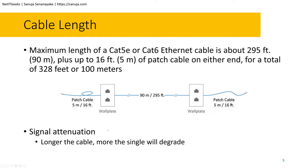The reason is signal attenuation. If you have a 200 or 300 meter Cat5e cable, you may completely lose the signal. But if you have 110 or 120 meters — just above the 100-meter maximum — you may experience intermittent signal attenuation.